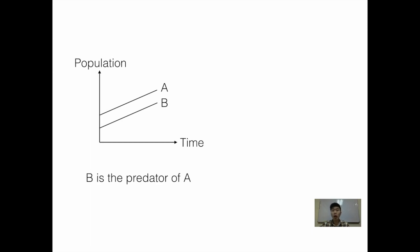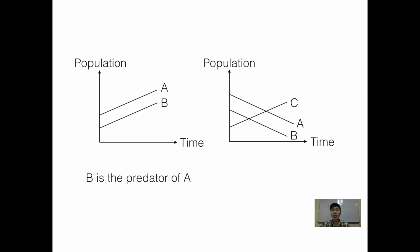I'm going to use another graph to help you understand this concept further. Looking at C, it has the smallest population from the beginning, so we can confirm that C is a predator of B. However, as you look at C, it increases with time while A also decreases with time. Therefore, we conclude that C is a predator of both A and B.